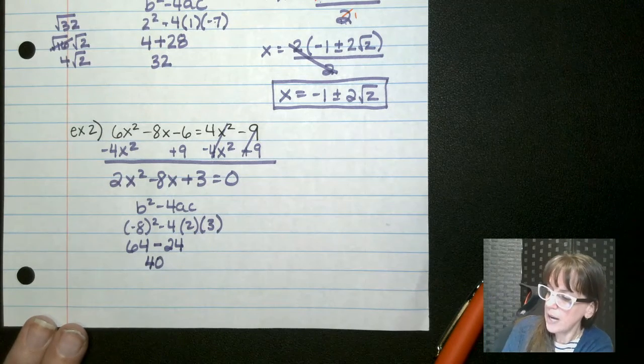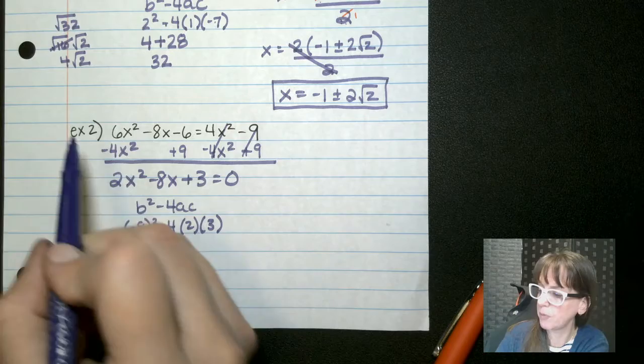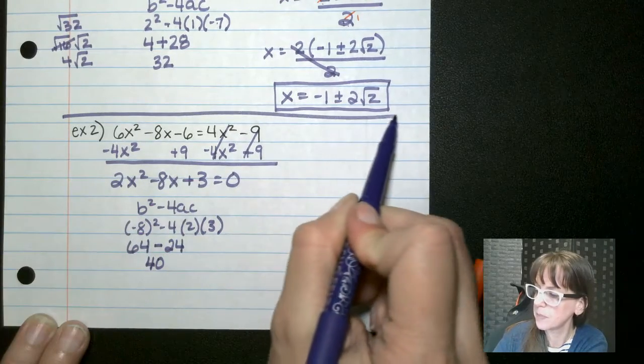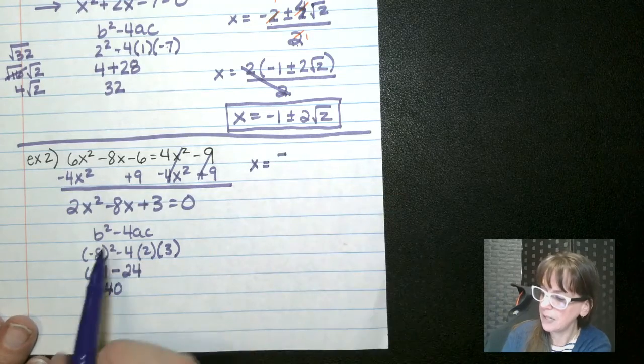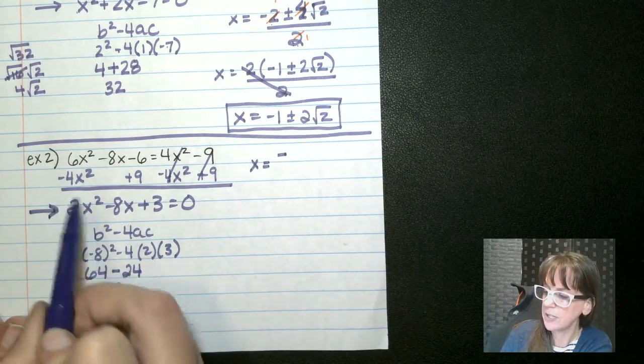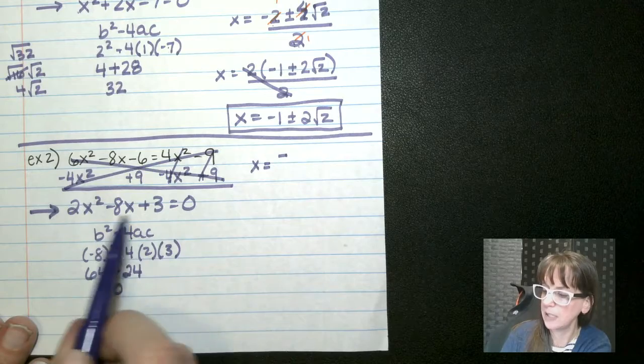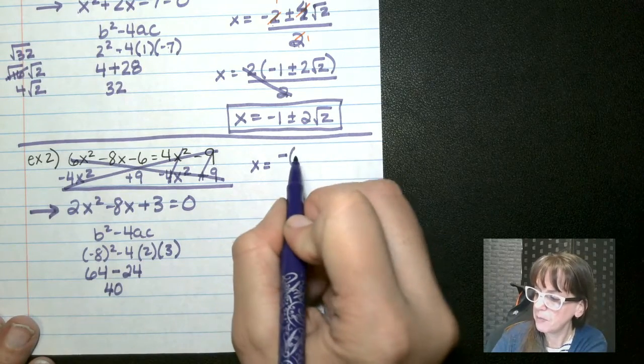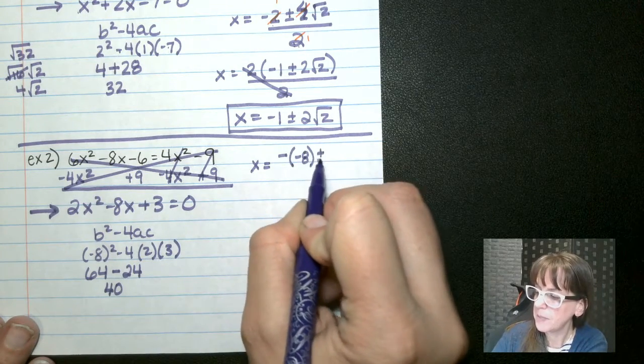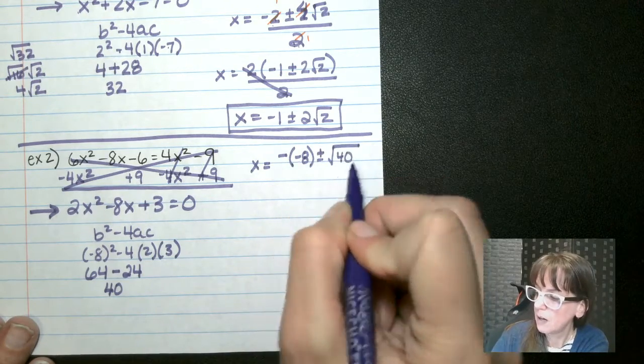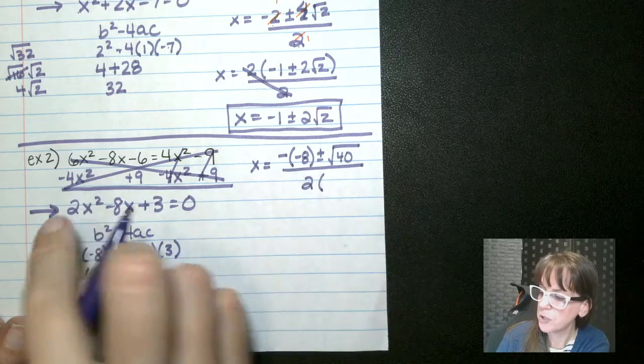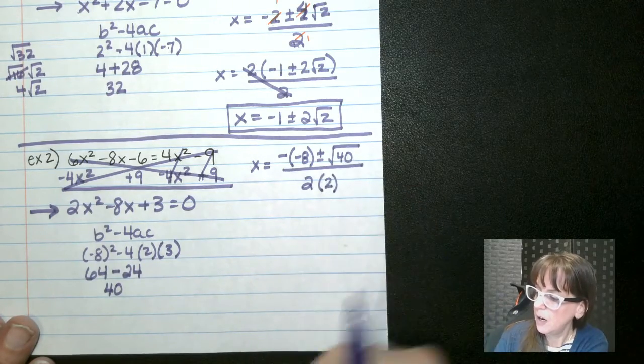Okay. So now we're ready to use our quadratic formula. Put a big line here. So we say x equals negative b. And remember, we're using this equation here. We don't care about this anymore because we cleaned it up. So negative b, which is negative 8 plus minus the square root of our discriminant, which we already figured out is 40. All divided by 2 times a, which is 2.